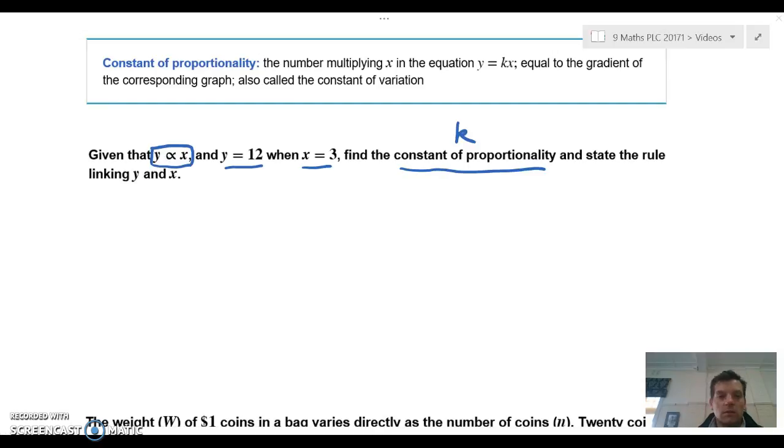So what we can do is, let's start with the equation y equals kx. We know that y is equal to 12, so we can put that in. So then we've got k and x is equal to 3. So we can then divide by 3 on both sides to cancel out, and we know that k is equal to 4.